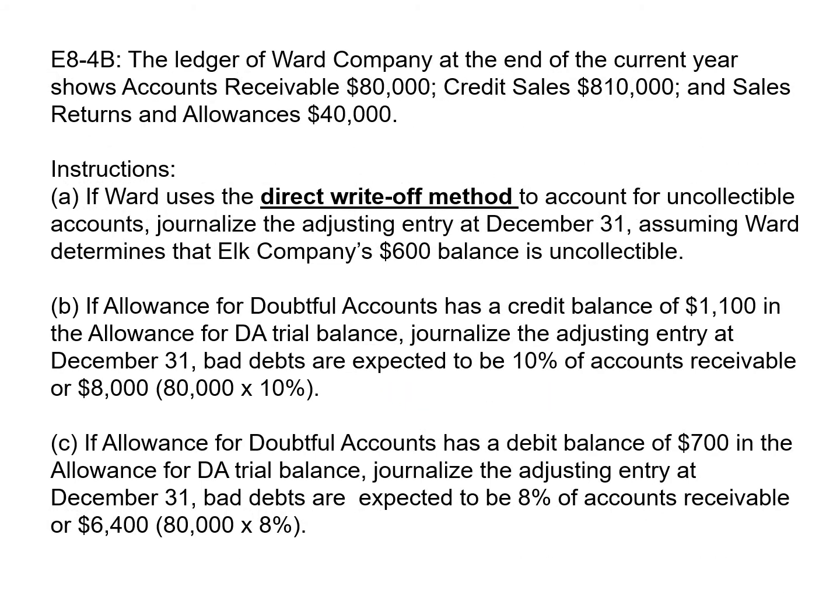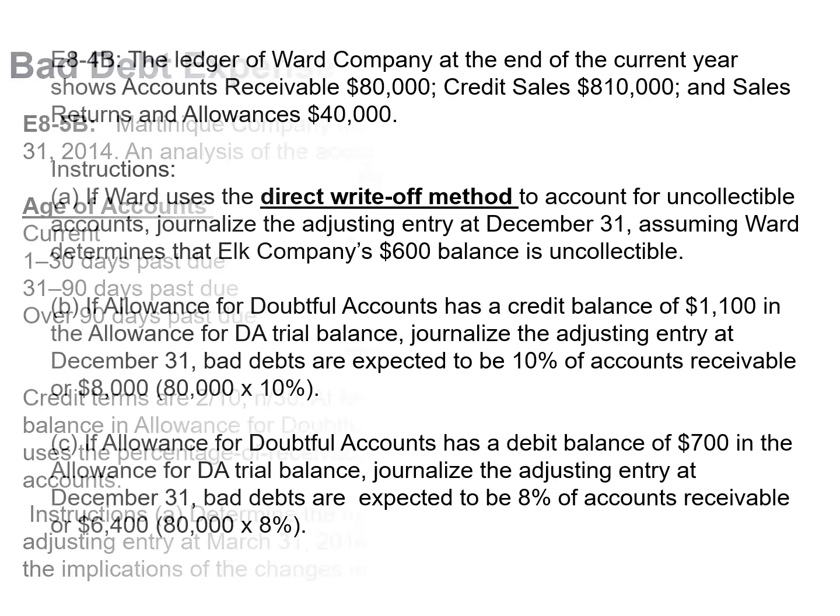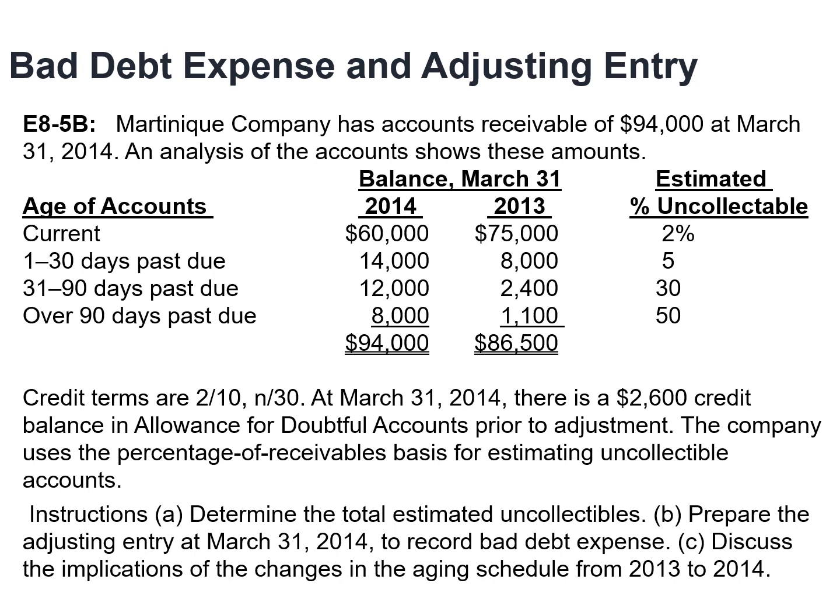This exercise will focus on both the direct write-off method (question A) as well as the allowance method (questions B and C). The solutions will be provided in another document. A separate exercise will focus solely on the allowance method, using the aging of receivables to determine the estimated uncollectibles and then prepare the adjusting entry to record bad debt. Companies prepare an aging schedule at least monthly to identify problem accounts. Consider what changes have occurred in the aging schedule from 2013 to 2014. The solutions to this exercise will also be provided in another document.